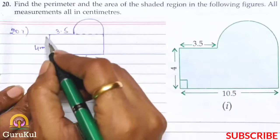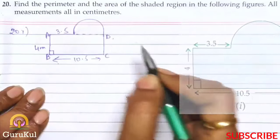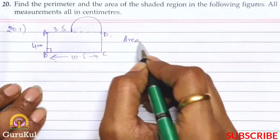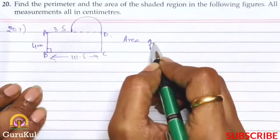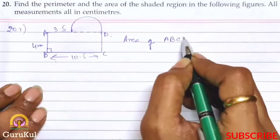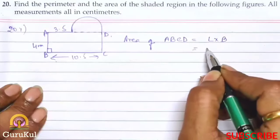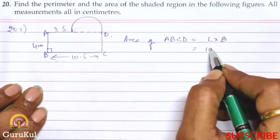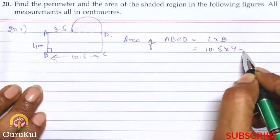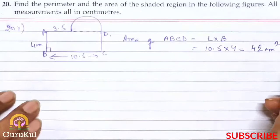We have labelled this A, B, C and D. So area of ABCD is equal to length into breadth, which is 10.5 into 4, that gives us 42 cm square.